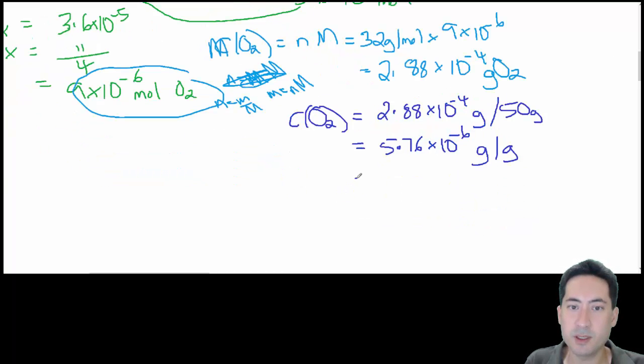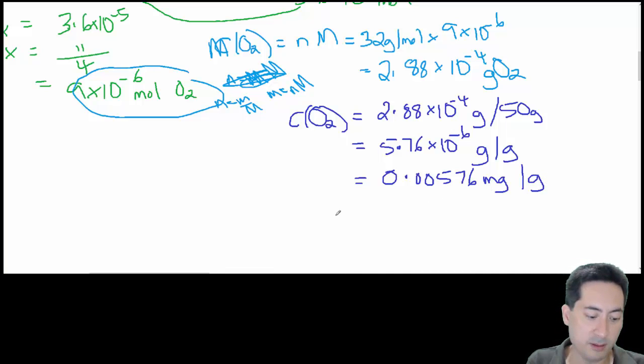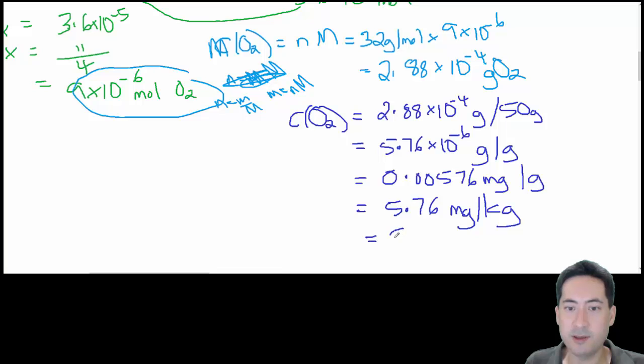Converting grams to milligrams, there's 1,000 milligrams in a gram, so I times that by 1,000. That's 5.76 by 10 to the minus 3. So that's milligrams per gram, and now if it's a kilogram, we need to times both sides by 1,000, because there's 1,000 grams in a kilogram. And 5.76 milligrams per kilogram, and that's what parts per million is. So the answer is 5.76 parts per million.